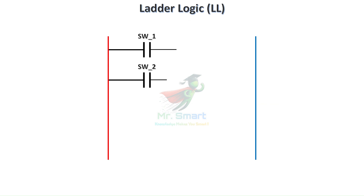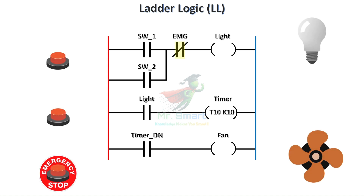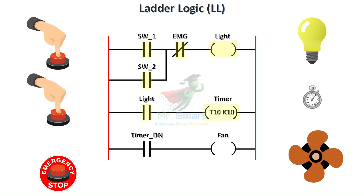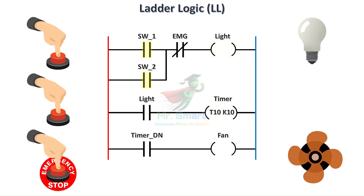Ladder diagram, or ladder logic, is the most popular PLC programming language and has its roots in electrical engineering. It visually resembles a ladder with rungs that represent logical operations. Each rung describes a control process, like turning on a motor when a switch is pressed. It's intuitive for electricians and technicians because it mimics the layout of physical relay circuits. Ladder logic is excellent for discrete control systems such as start-stop operations, alarms, and interlocks.